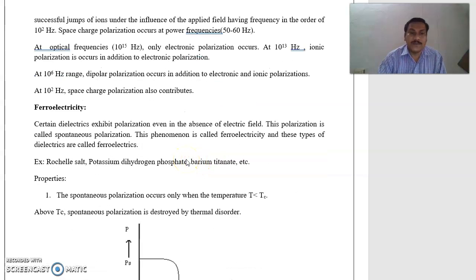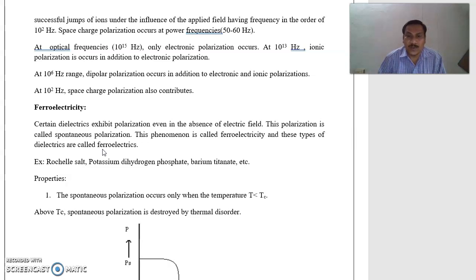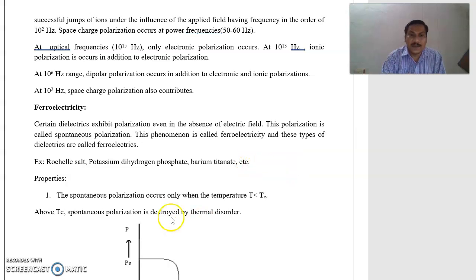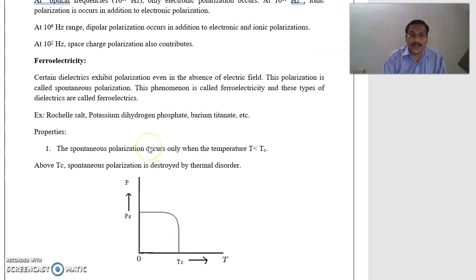Next, ferroelectricity. Certain dielectrics exhibit polarization even in the absence of an electric field. If there is no electric field, some types of materials still show polarization or dipole moment. Those materials are Rochelle salt, potassium dihydrogen phosphate, barium titanate, etc. This polarization is called spontaneous polarization. This phenomenon is called ferroelectricity, and these types of dielectrics are called ferroelectrics.